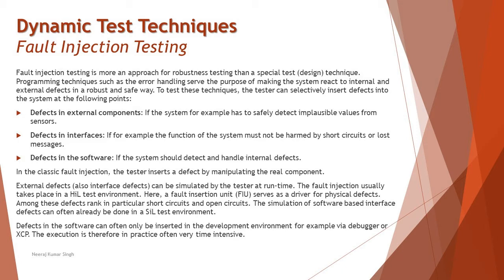The first point is defects in external components — for example, the system must safely detect implausible values from sensors. Implausible basically means values that are not seeming reasonable or probable, which people generally don't input. The probability is very low that someone will try such data, but you feed it in because out of 100 users, if one person tries it, you need to know how your system behaves. This mainly covers failing scenarios — does the system survive?